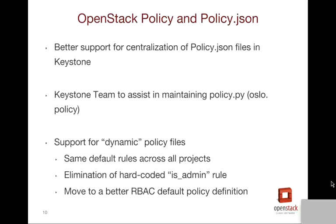Some exciting changes to how policy is working in OpenStack came out of conversations started during the Paris summit. The general gist is we want to support centralization of the policy.json files. Keystone will initially be the location where these files will be centralized to, so endpoints will be able to request their policy from Keystone. This allows us to support dynamic policy files in the future, ensuring that all the default rules are the same across all projects and all endpoints, rather than having varying assumptions within each endpoint.